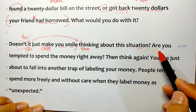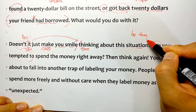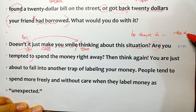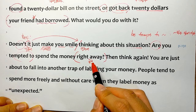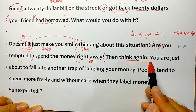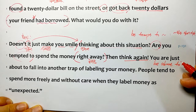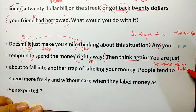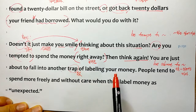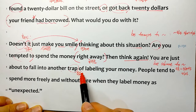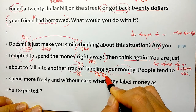Are you tempted to spend money right away? - be tempted to하면 '뭐뭐하고 싶어지다'이런 뜻입니다. 곧바로 돈을 쓰고 싶어지겠죠? Then think again. You are just about to fall into another trap of labeling your money. - be about to하면 '막 뭐뭐하려고 하다'라는 뜻입니다. 당신은 이제 막 또 다른 덫에 걸리는 참입니다. labeling your money - 당신 돈에 이름 붙이는 그런 덫에 걸리려 합니다.